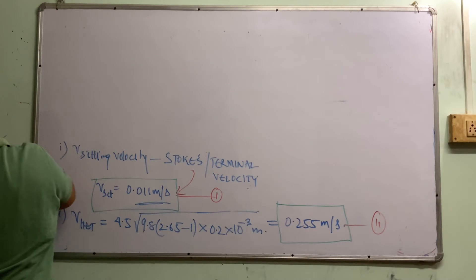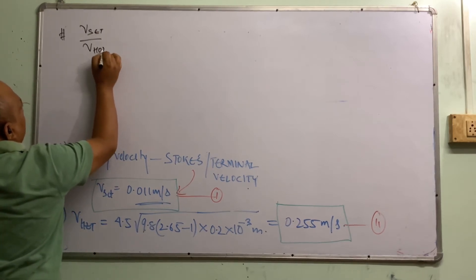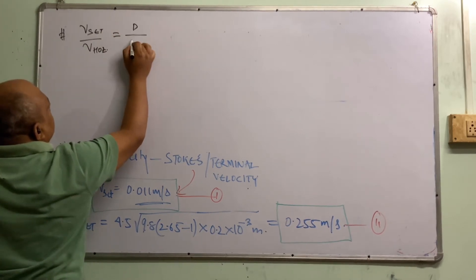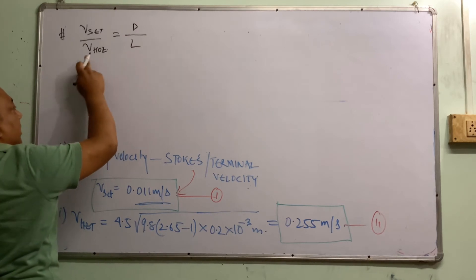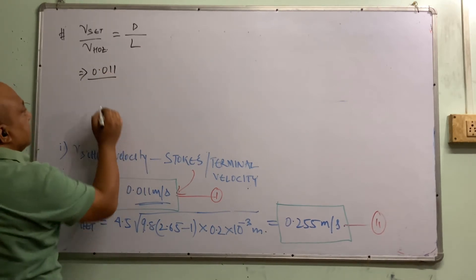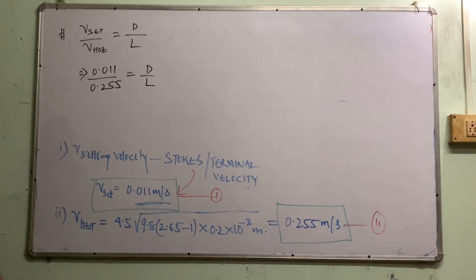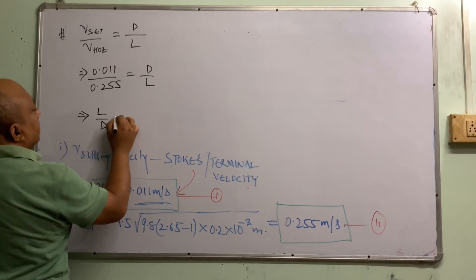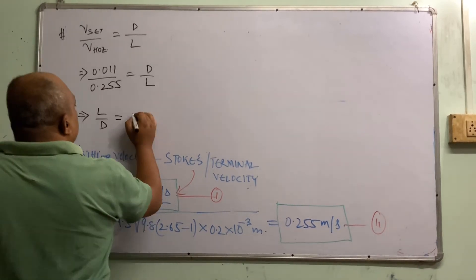The condition is: V_settling / V_horizontal = depth / length. So 0.011 divided by 0.255 equals depth divided by length. Rearranging, length / depth = 0.255 / 0.011 ≈ 23. Settling velocity corresponds to depth and horizontal velocity corresponds to length.